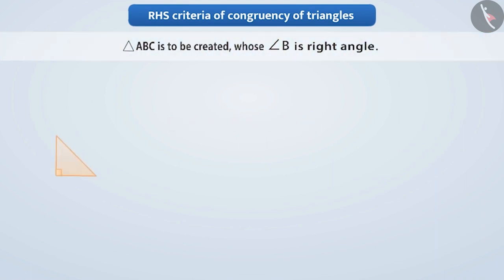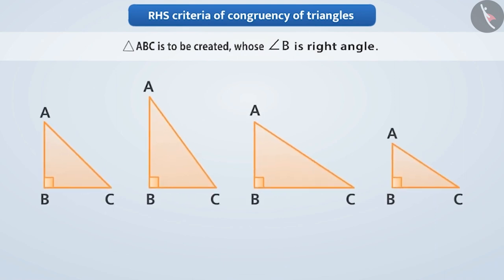From this information we can make different types of triangles which are not the same size. That is, the information given is insufficient.